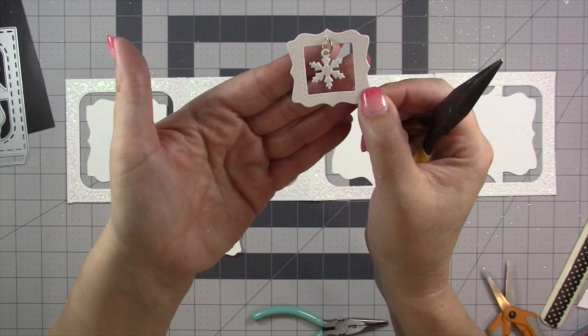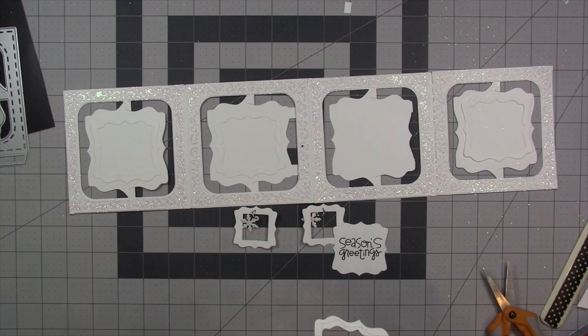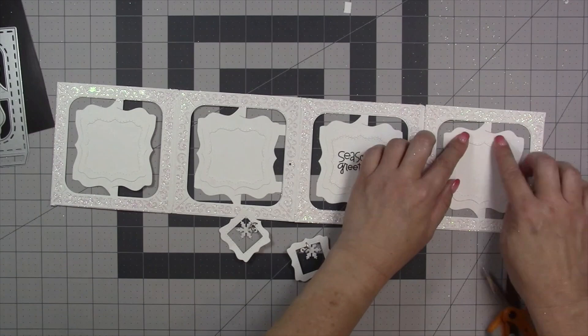Before I add my charm frames I want to decorate my pages so I'm going to start with those frames that I cut earlier. All four pages are going to get a frame and page 3 is going to get my greeting. And then I'm going to make some snowmen.